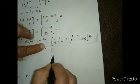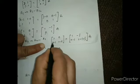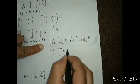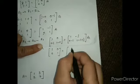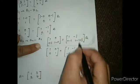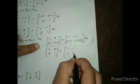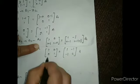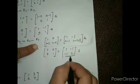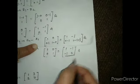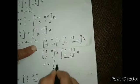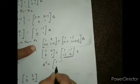आपकी value आएगी 1, 0, 1 minus 1, 0, 1. This is equal to 1 minus 1, minus 1, 1, and 1 plus 1 तो यह 2 हो जाएगा। Check this — this is the identity matrix. So this becomes your A inverse. A inverse is equal to [1, -1; -1, 2].